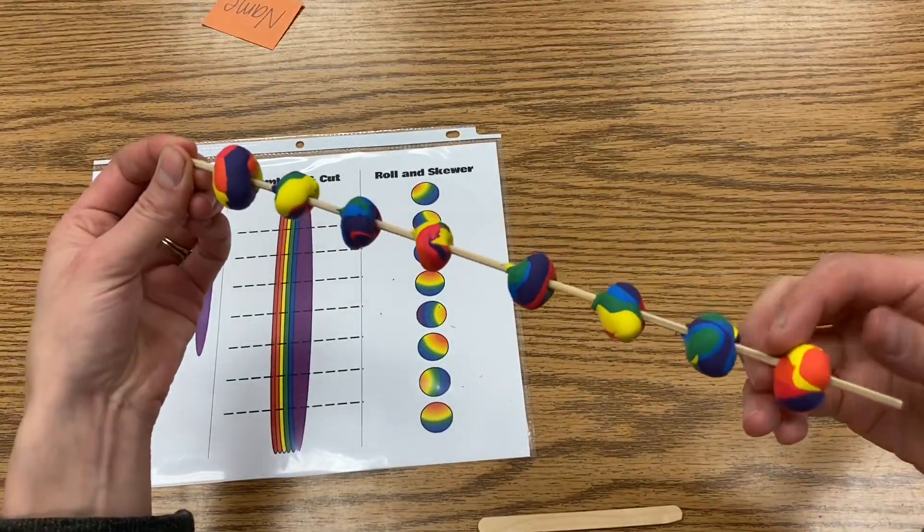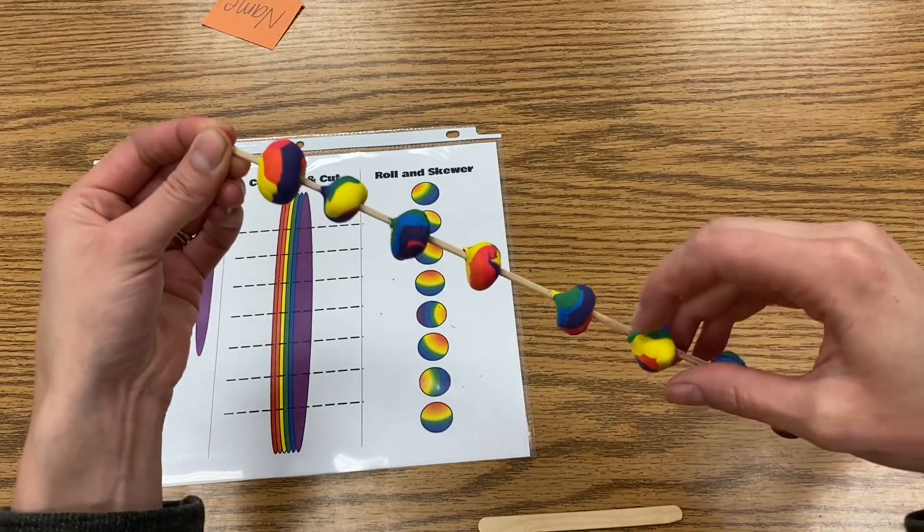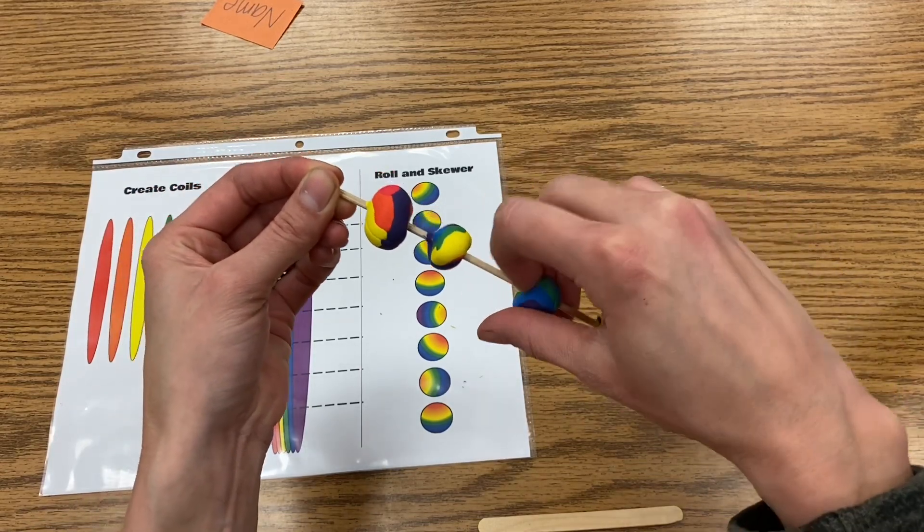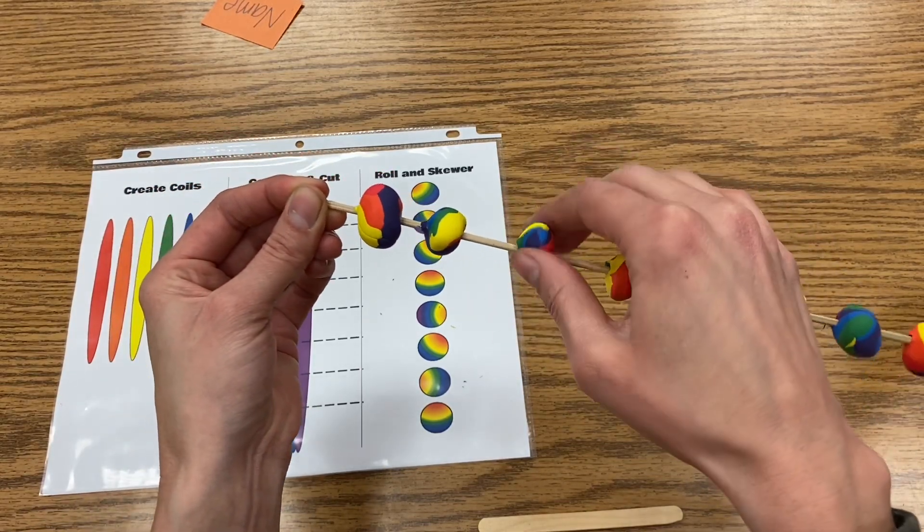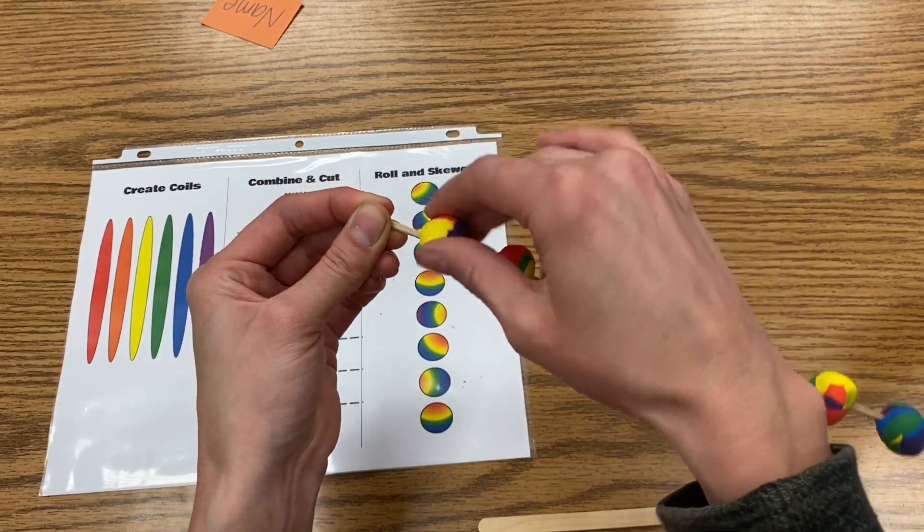Once you have all of them on, if some of them look a little bit weirdly shaped, you can sort of roll them back up or fix the shape a little bit. Just make sure that they're nice and spaced out—again, none should be touching. Make sure you can give it a little twist so it's not stuck on your skewer.